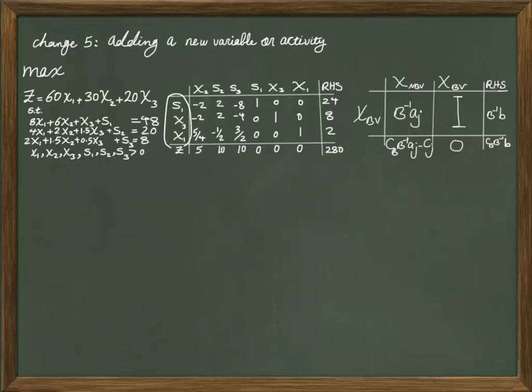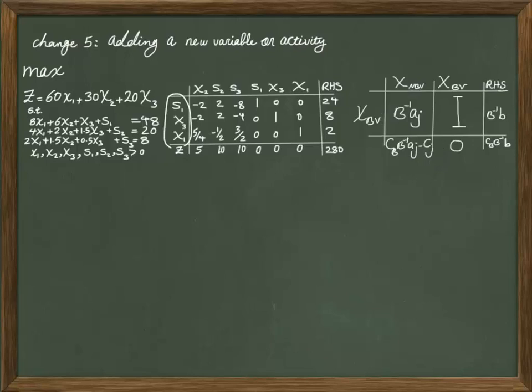With that definition, the only thing that is going to change by adding a new variable or activity is a new column in your table, which represents the coefficient of that non-basic variable in the final table, as well as the coefficient in the row of Z. Let's look at one example to clarify this definition further in detail.